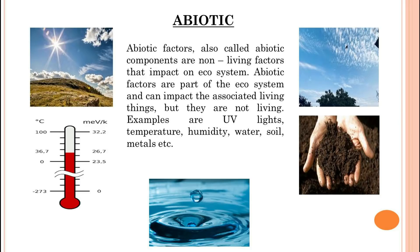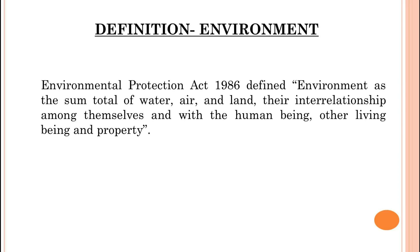Abiotic factors, also called abiotic components, are non-living factors that impact on the ecosystem. They are part of the ecosystem and can impact the associated living things, but they are not living. Examples are UV light, temperature, humidity, water, soil, metals, etc. The Environmental Protection Act 1986 defined environment as the sum total of water, air and land, their interrelationship among themselves and with human beings, other living beings and property.